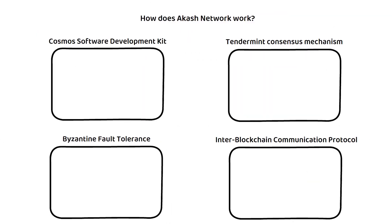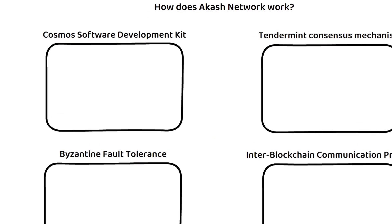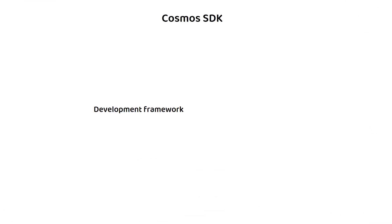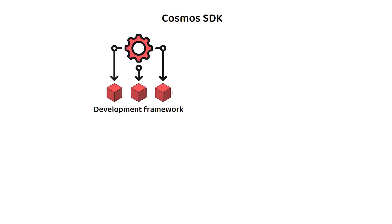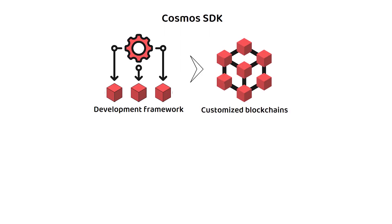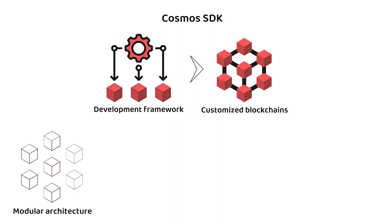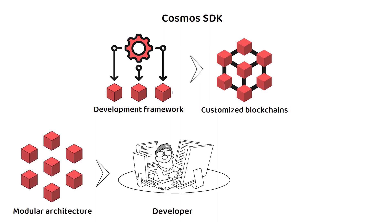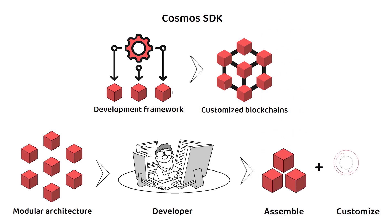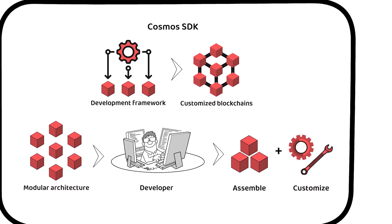First, the Cosmos Software Development Kit, or SDK, is a blockchain development framework that empowers developers to create their own customized blockchain networks. The SDK operates using a modular architecture which allows developers to assemble and customize various components to suit their specific needs.